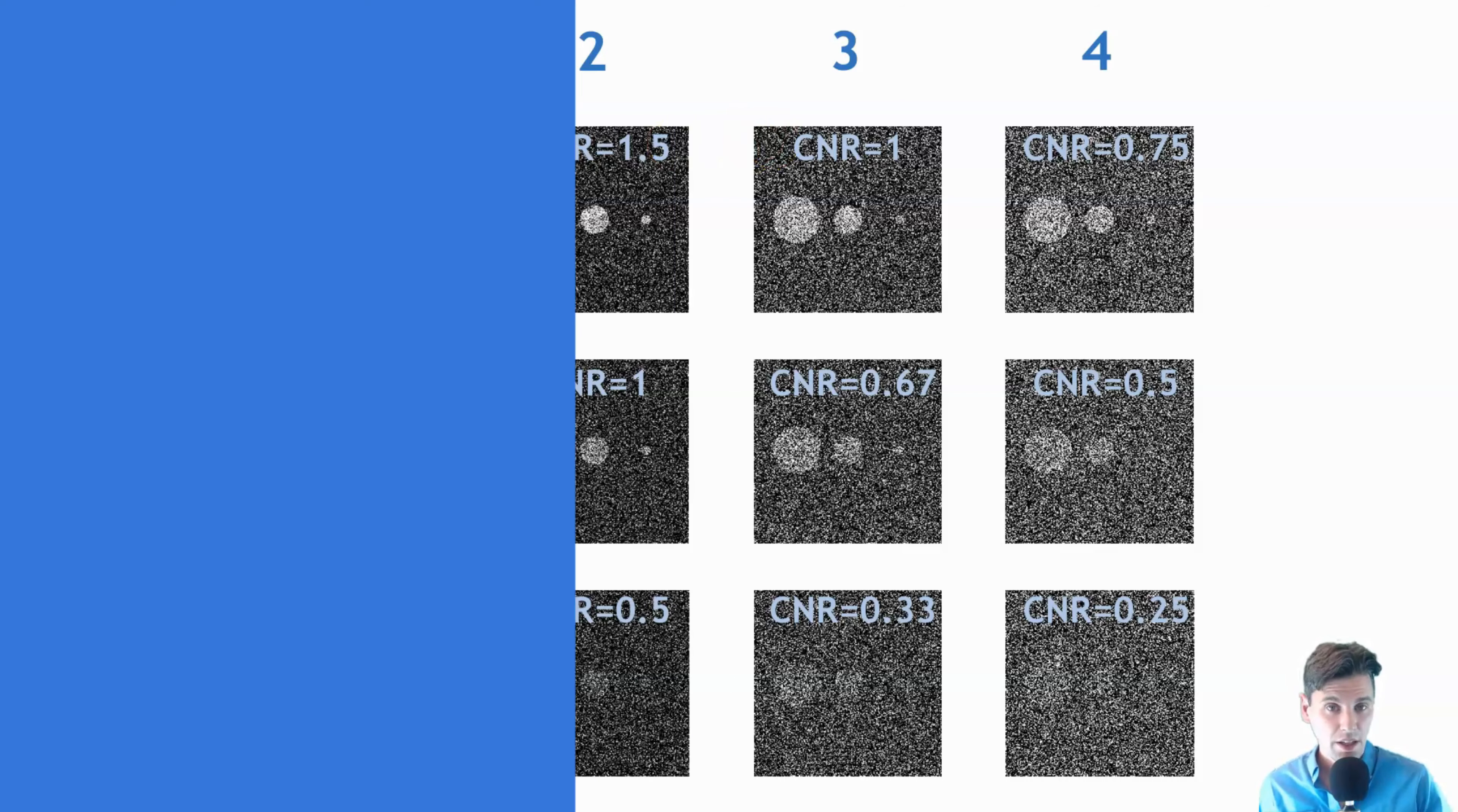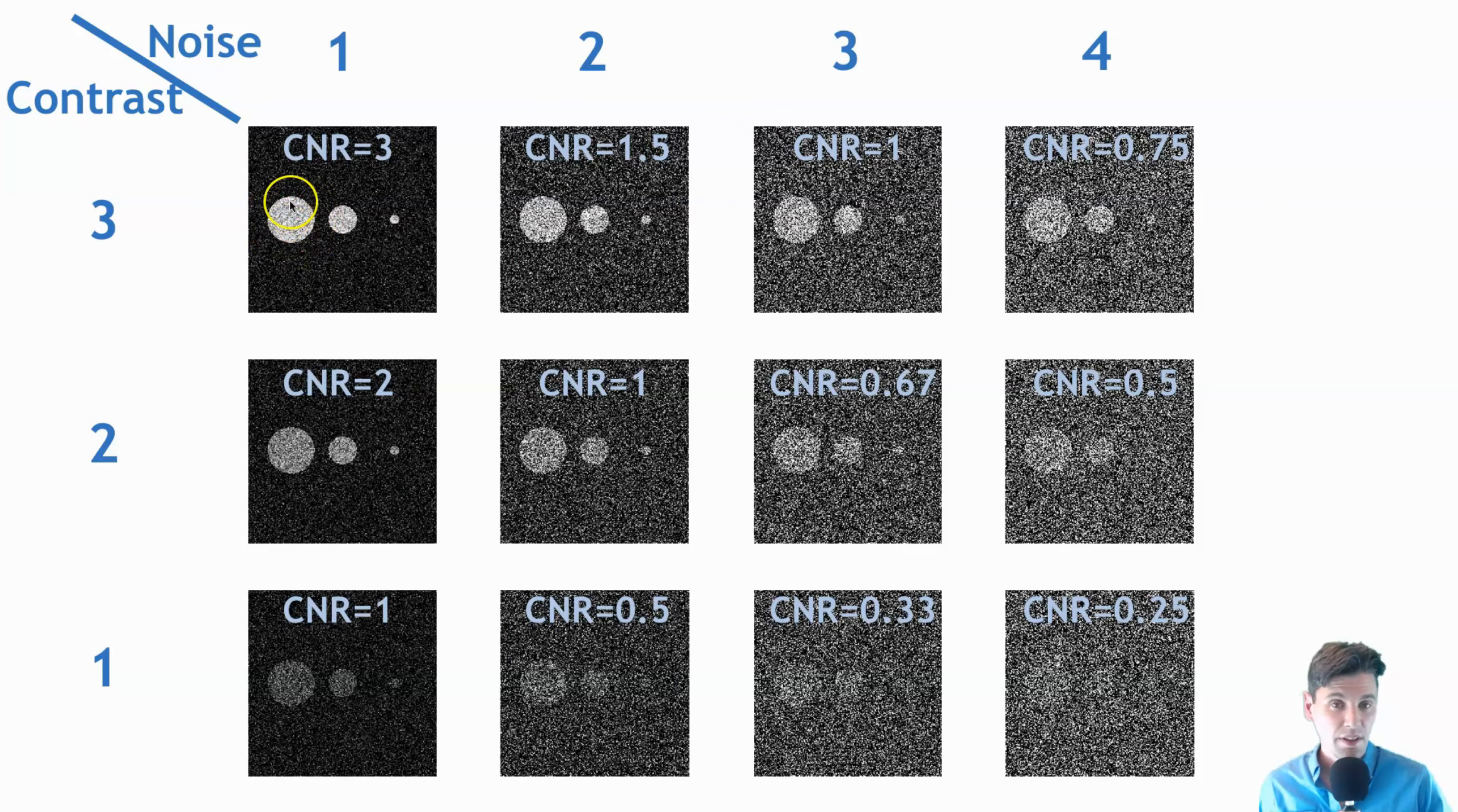For instance, if this was a CT image and if the signal was say 20 Hounsfield units above the background of say 40 Hounsfield units, so if this was 60 Hounsfield units and this was 40 Hounsfield units, then the contrast would be 20 Hounsfield units in that case.